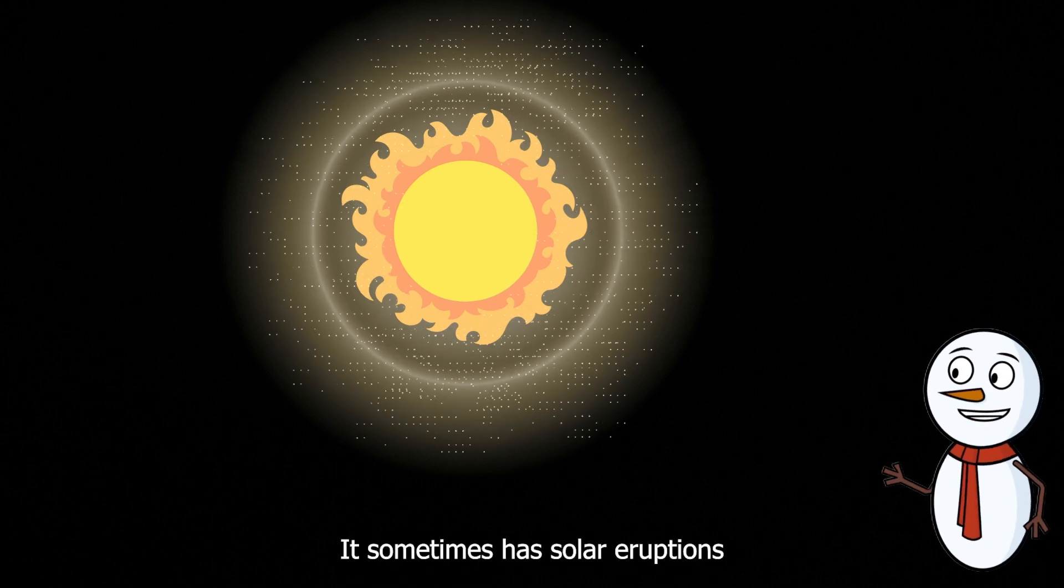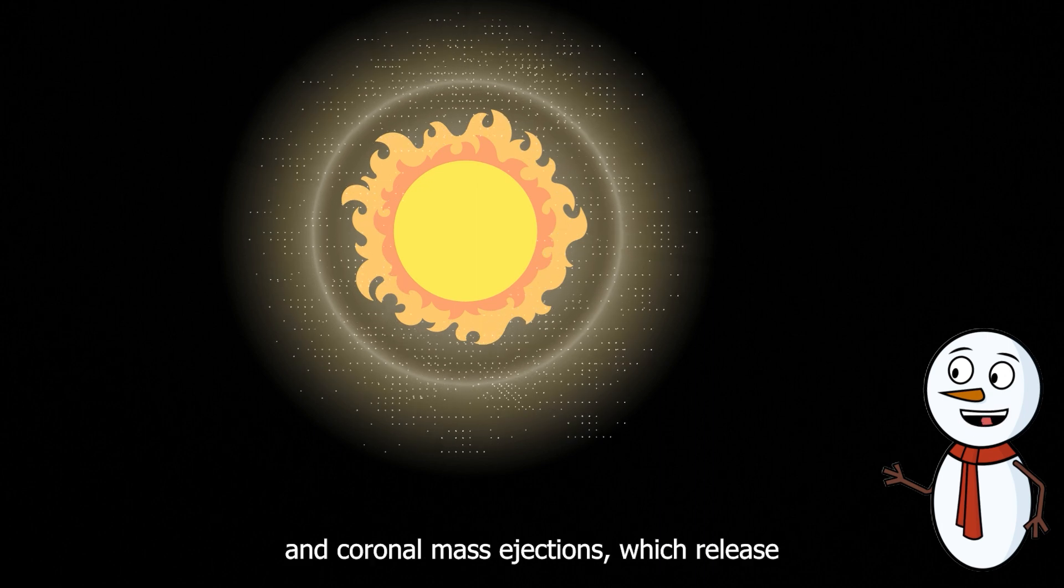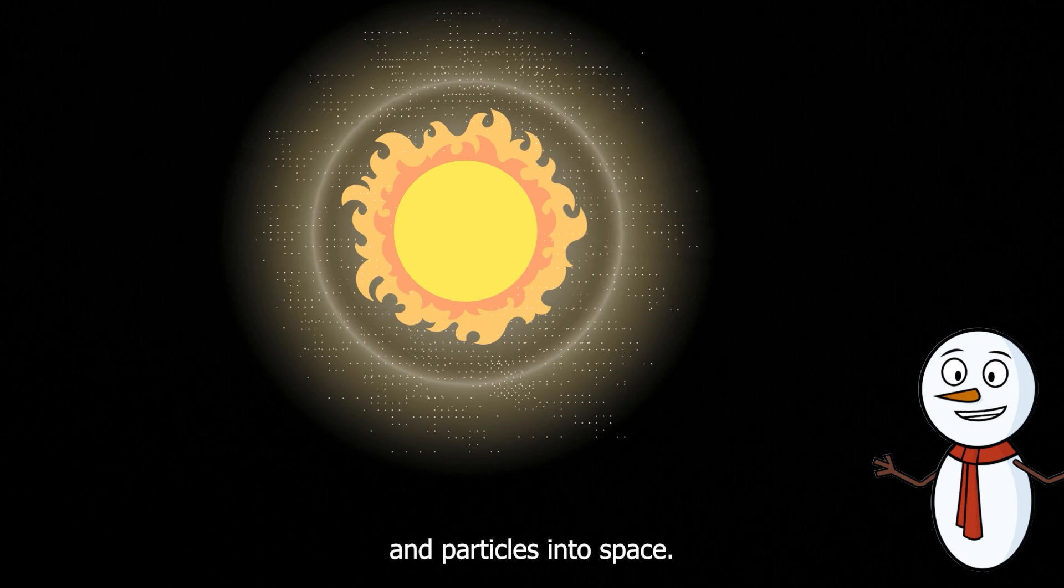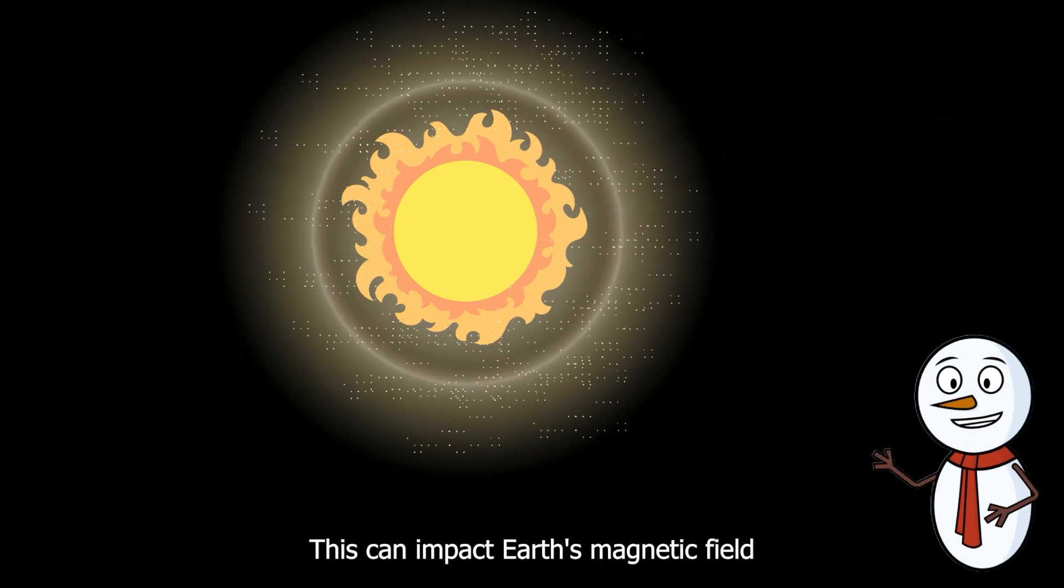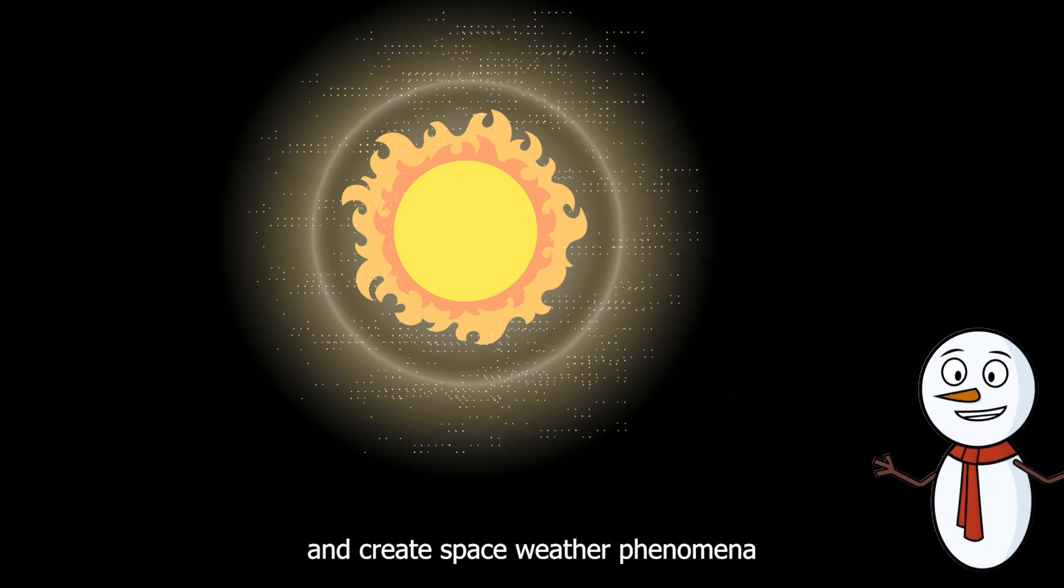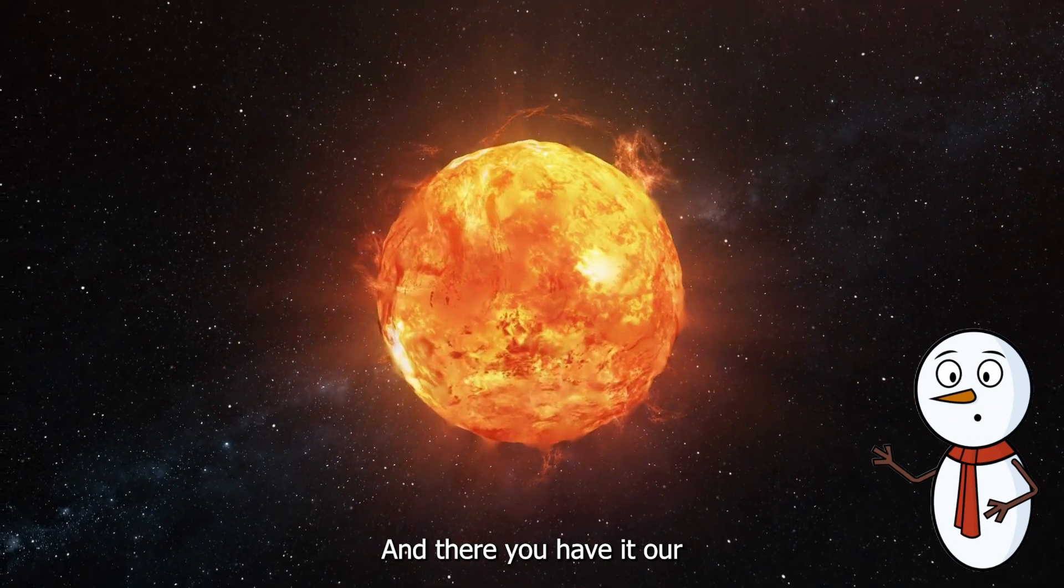But the Sun isn't always calm. It sometimes has solar eruptions, like solar flares and coronal mass ejections, which release bursts of energy and particles into space. This can impact Earth's magnetic field and create space weather phenomena like the northern lights.